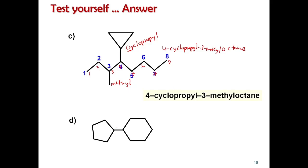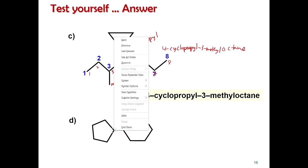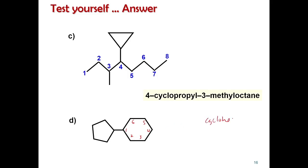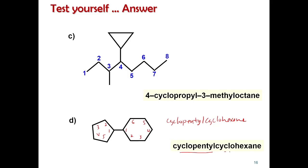For two cyclic compounds attached directly to each other with no carbon chain in between, choose the ring with the greater number of carbons as the parent chain. The larger ring has six carbons — cyclohexane — so it is the parent. The smaller five-carbon ring — cyclopentyl — is the substituent. With only one substituent on the ring, we do not write the position number: the name is cyclopentylcyclohexane.